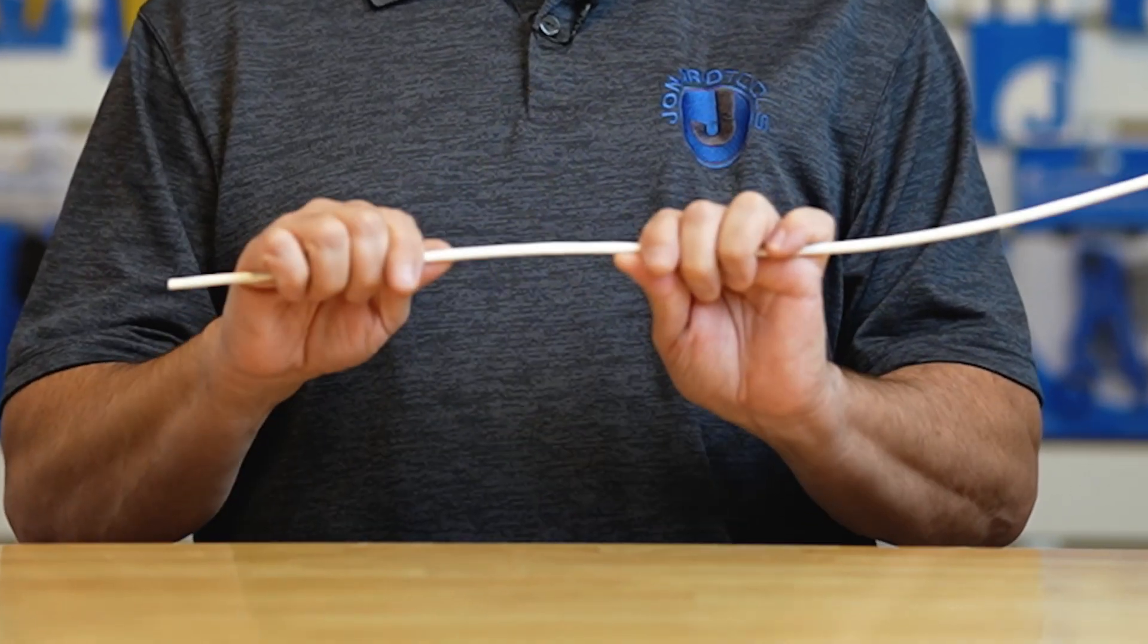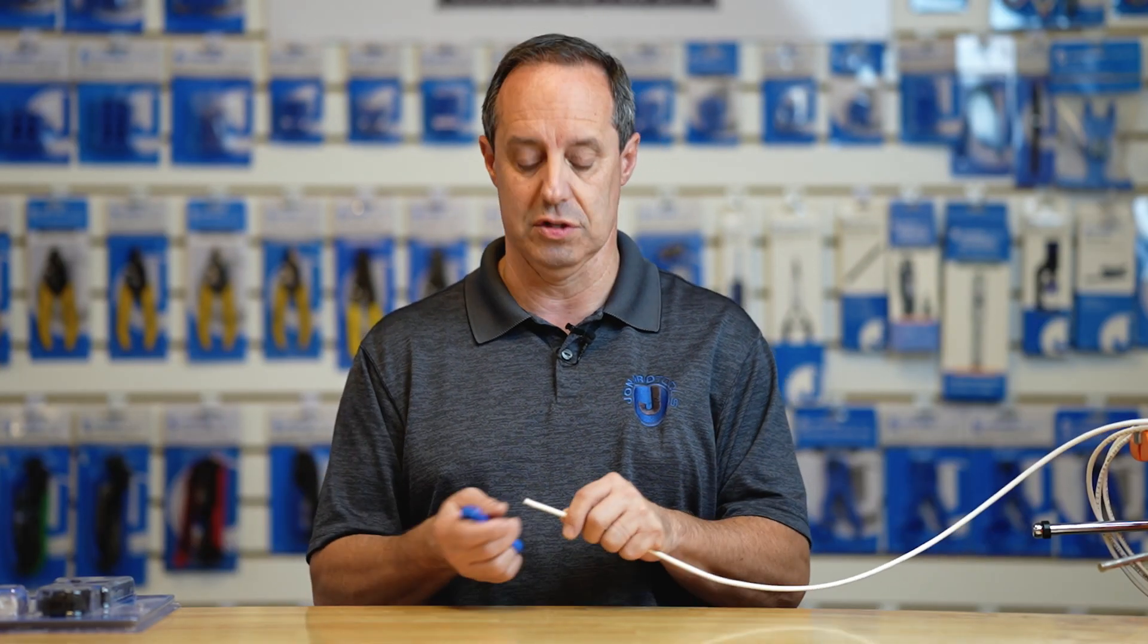So the first thing we have to do is remove the jacket from our network cable. In this case I have a CAT-6 cable. The CSR-56 is designed to remove the jackets from CAT-3, CAT-5, CAT-5E, CAT-6 network cables as well as twisted pair cables used for telephone systems.